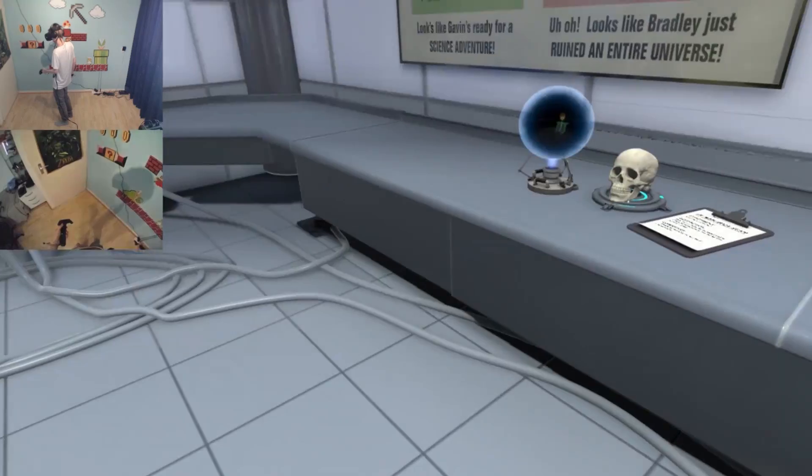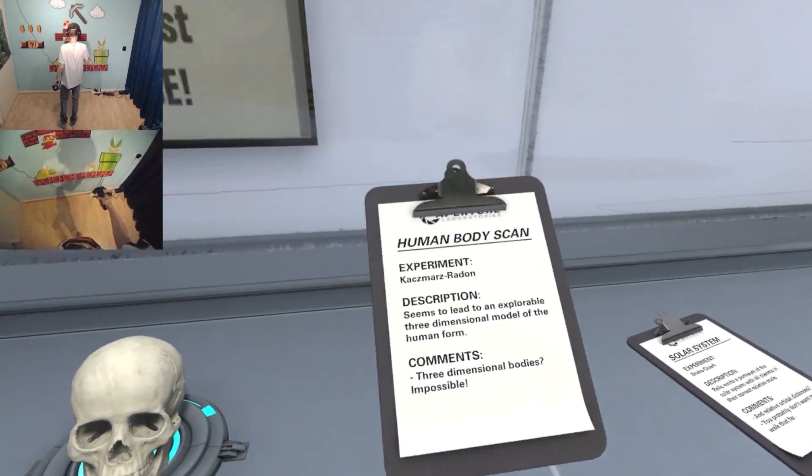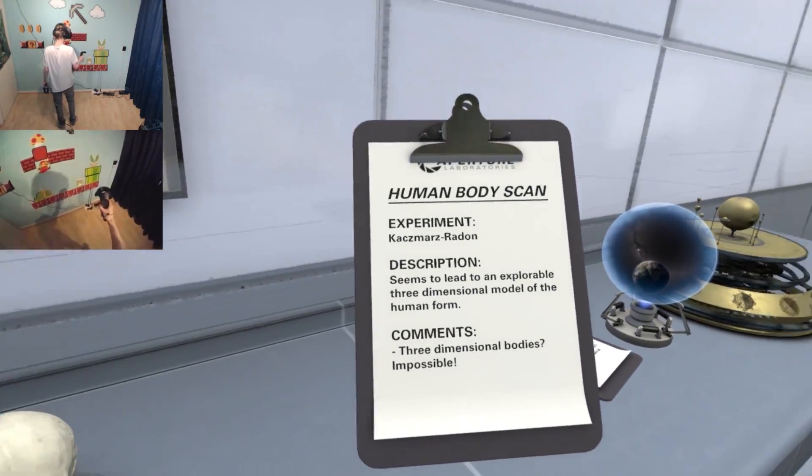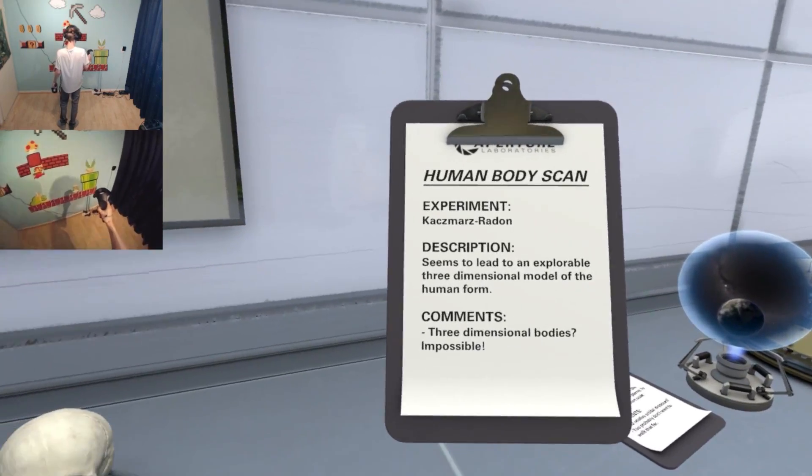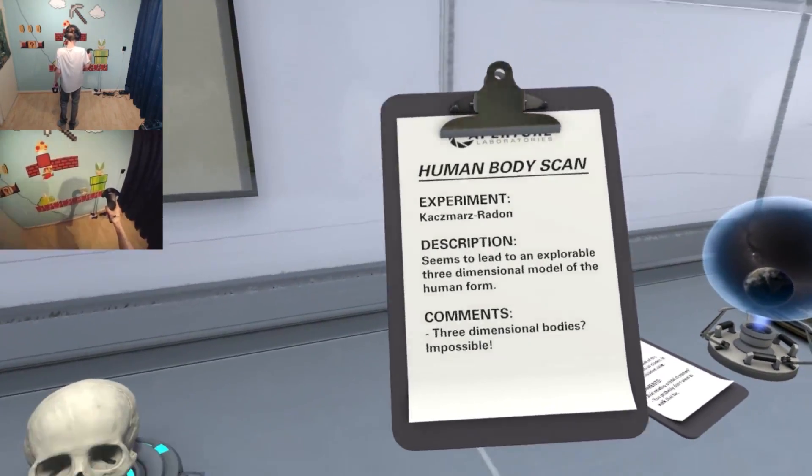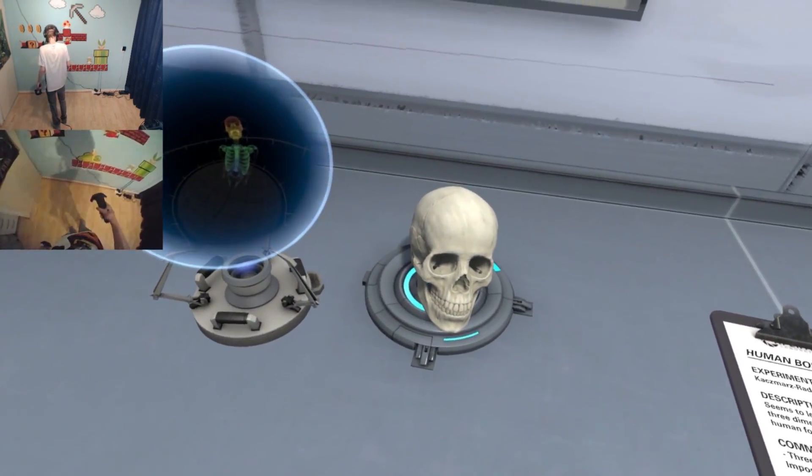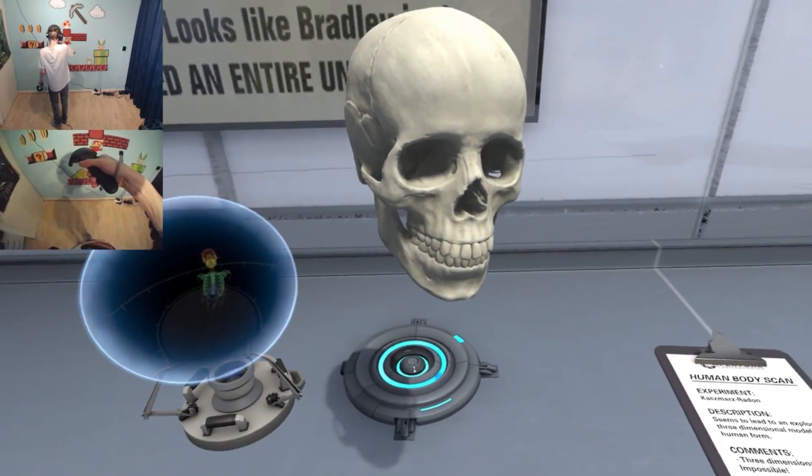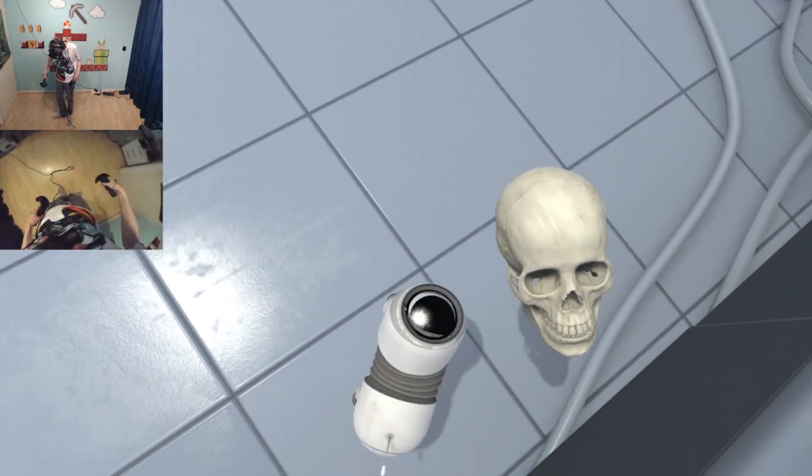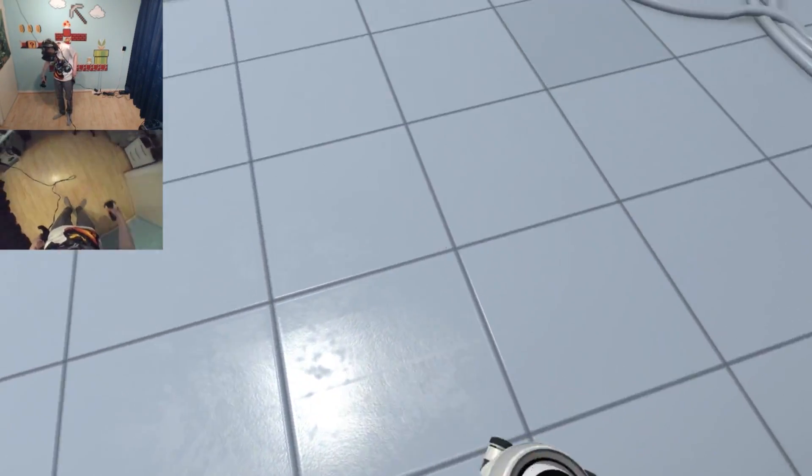We are here to try out two new experiences. Let me show you the first one. Here we got a note that says 'human body scan - description seems to lead to an explorable three-dimensional model of the human form.' That's really interesting. We got a skull here that looks kind of scary. You want it? It's your new toy, go get it! Oh man, he looks like a nightmare when he's holding the skull like that. It's creepy, stop it!